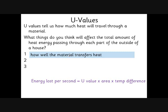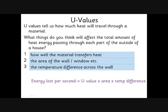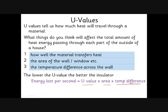A high U-value is a bad thing — that's the key thing to remember. It also depends on how big the surface area is: more energy may go through the wall than the windows simply because there's a lot more wall. And it depends on the temperature difference between the inside and outside of your house — turning the thermostat down a little means a lot less heat flows outside. There is an equation: energy lost per second equals U-value times area times temperature difference.